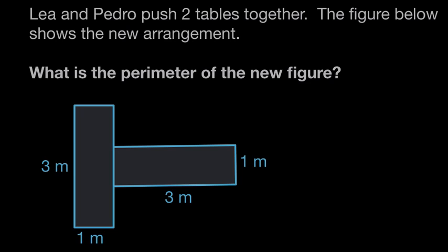And we are asked, what is the perimeter of the new figure? Perimeter is the distance around the outside, so all of this space around the outside is the perimeter, and we need to figure that out.